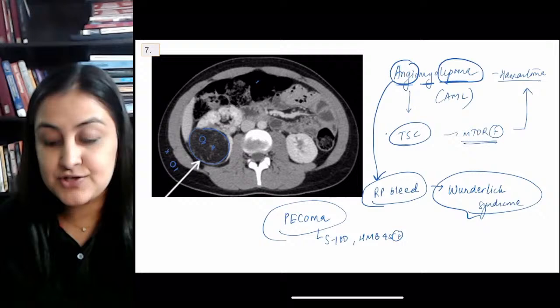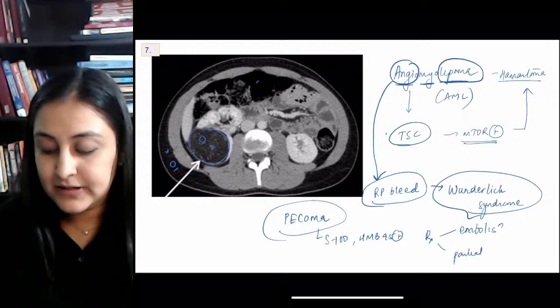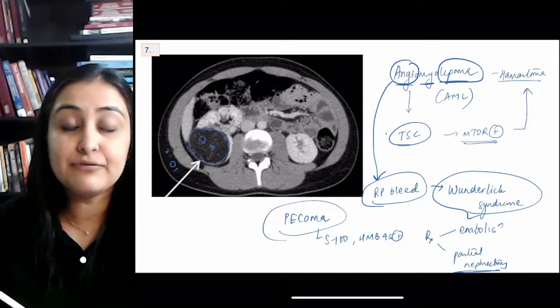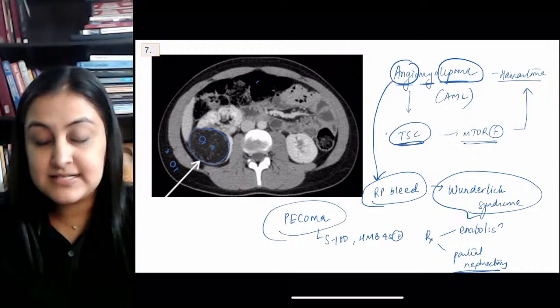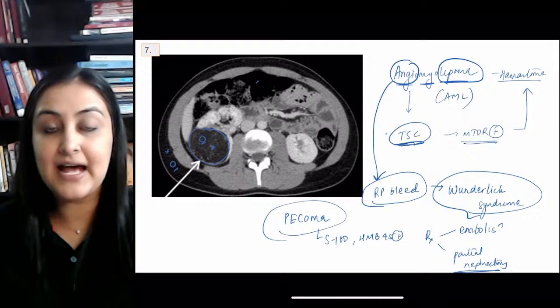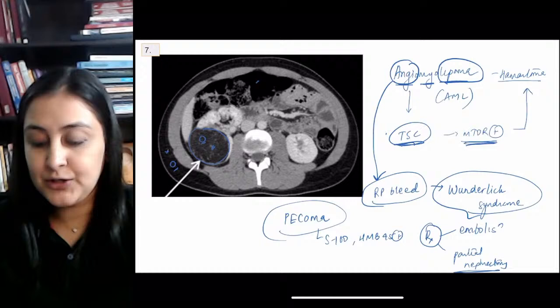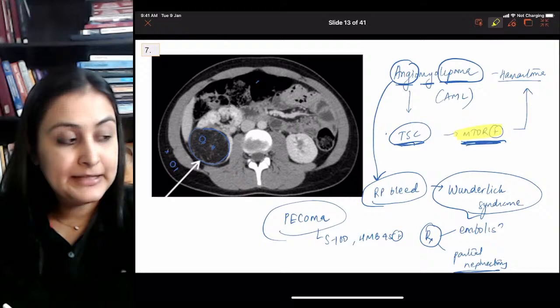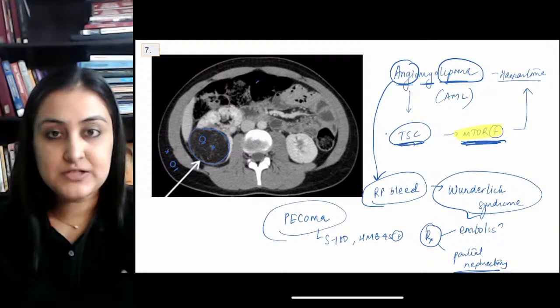Treatment of AML: angio-embolization or partial nephrectomy — not complete nephrectomy — because it is syndromic and patients can have multiple AMLs plus risk of RCC, so we want to preserve the kidney. If surgery is not possible, mTOR inhibitors — sirolimus or everolimus — can be tried in severe cases.